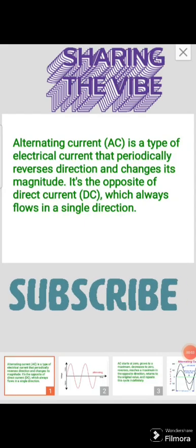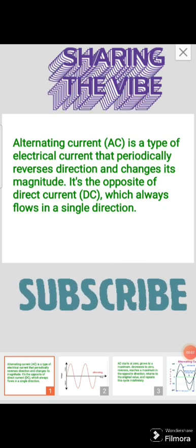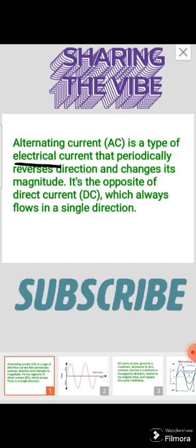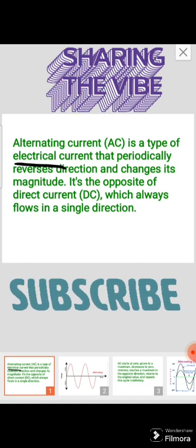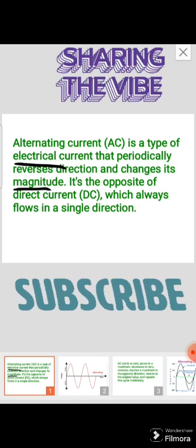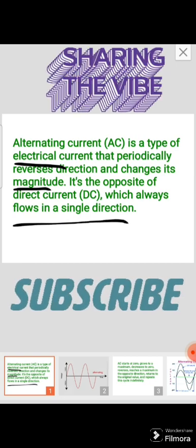Good morning everybody, today we will discuss alternating currents. Alternating current is a type of electrical current that periodically reverses its direction and changes its magnitude. It is opposite to direct current, which always flows in one direction.